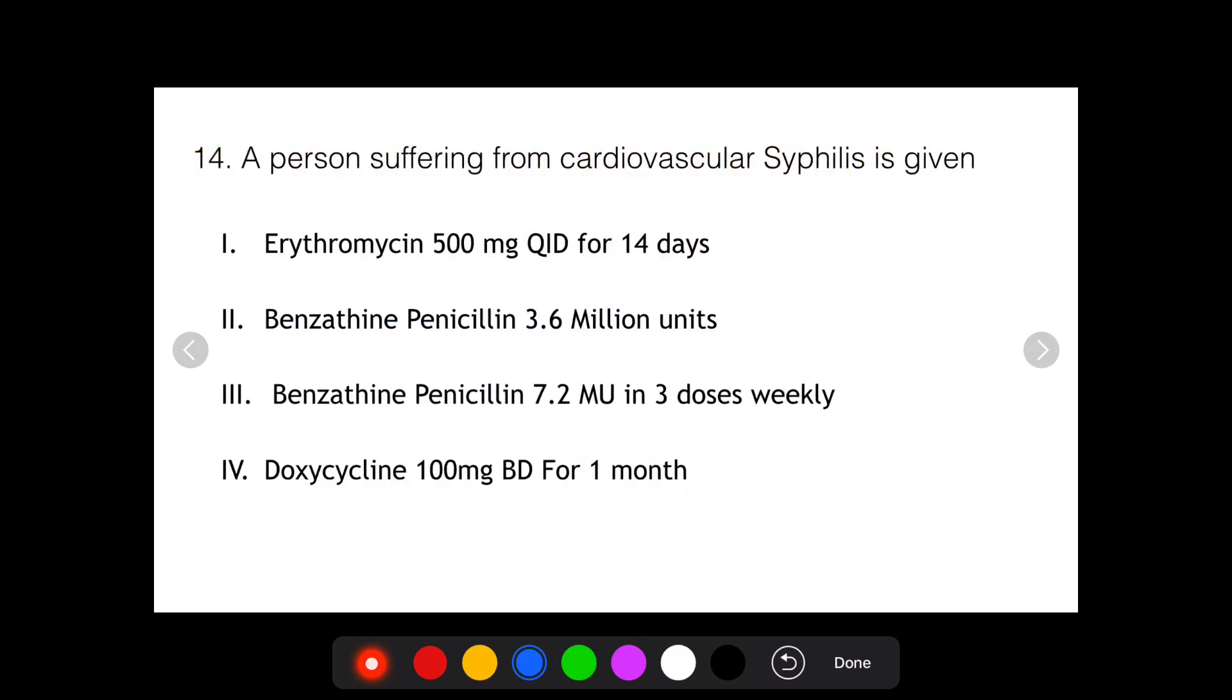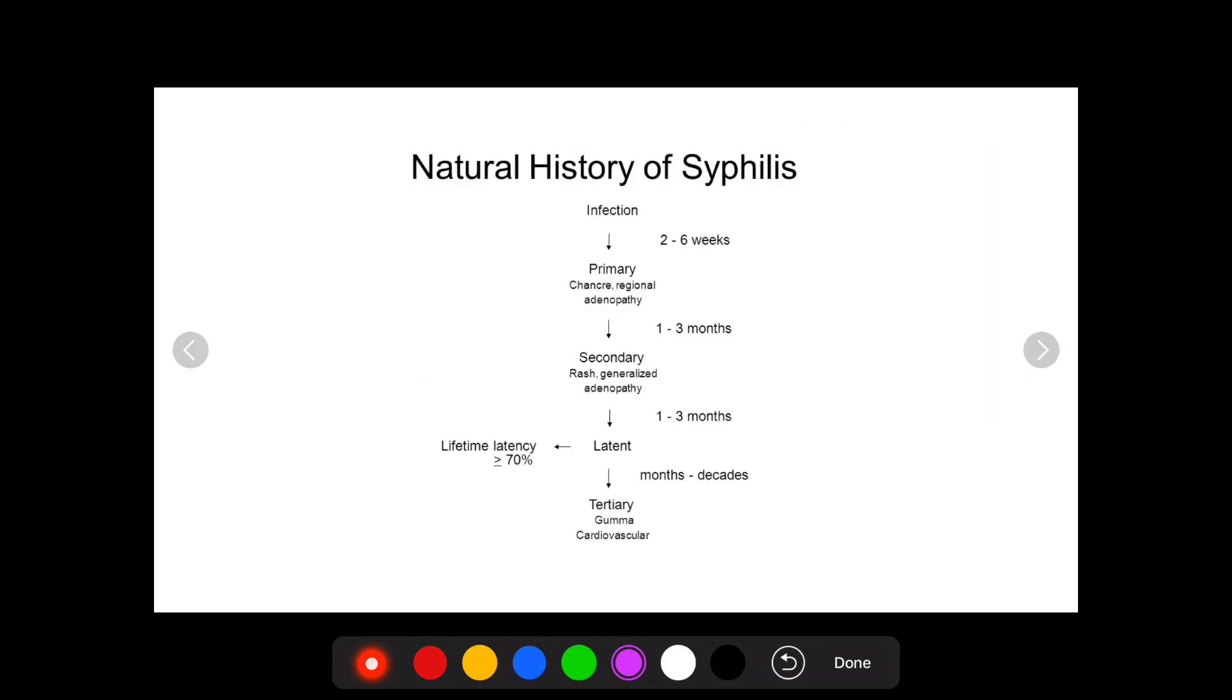Another question that was asked in AIIMS May 2018 was, what's the treatment of choice for a person who's suffering from cardiovascular syphilis, what should he be given? It's basically asking what exactly is cardiovascular syphilis and what's the treatment of choice. Cardiovascular syphilis, as we will discuss, is a form of tertiary syphilis.